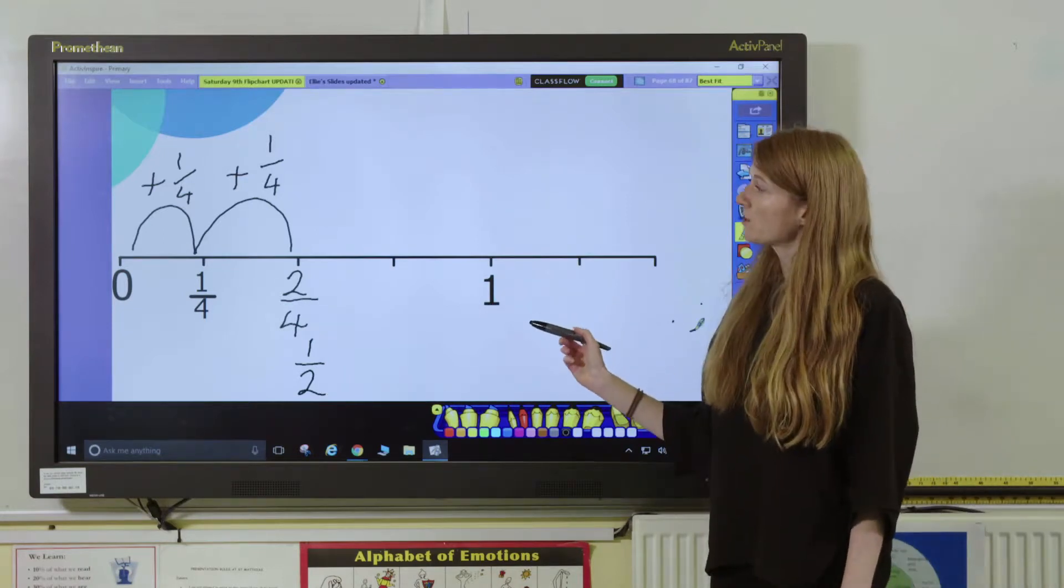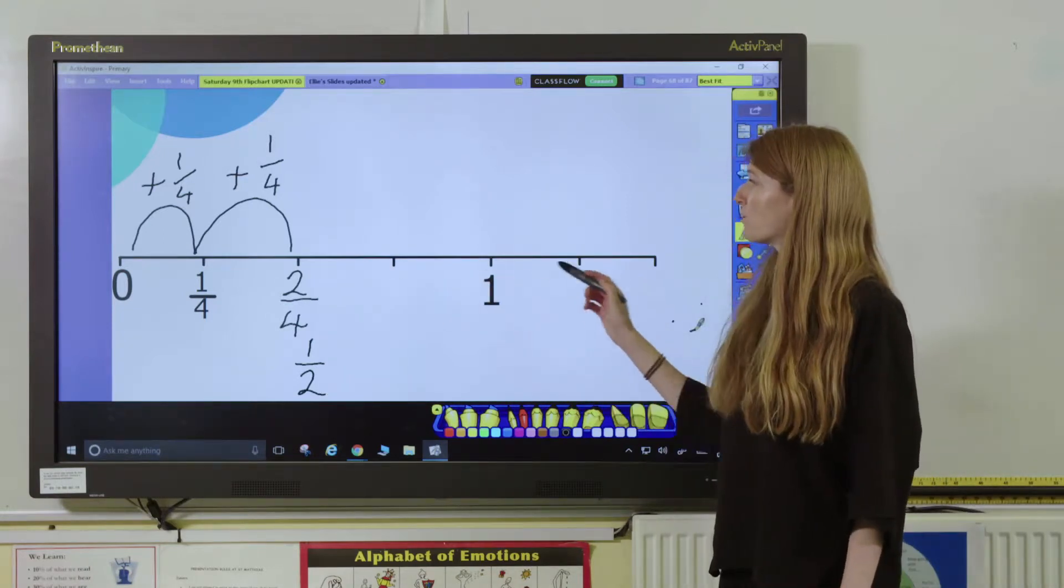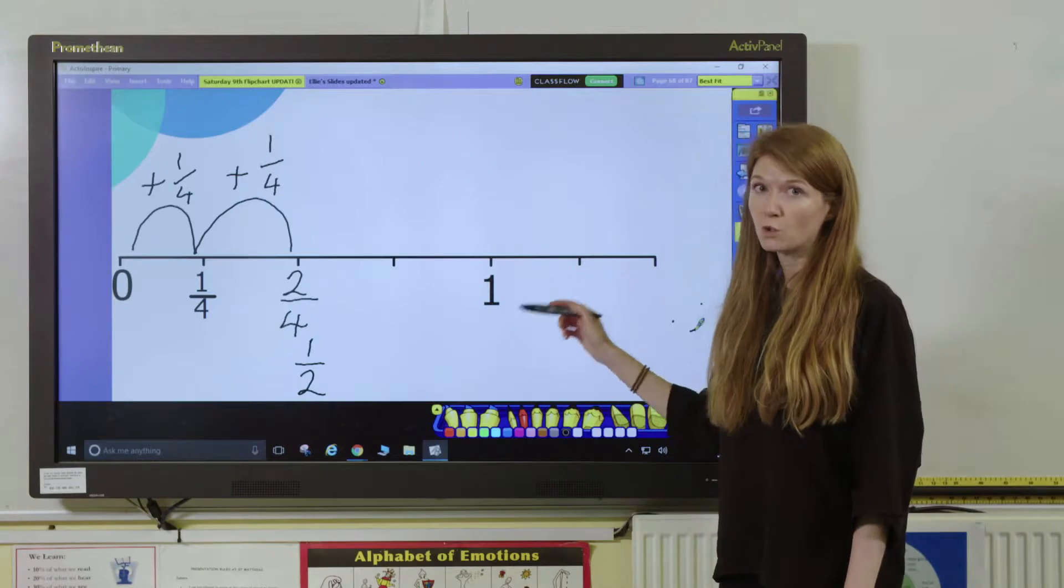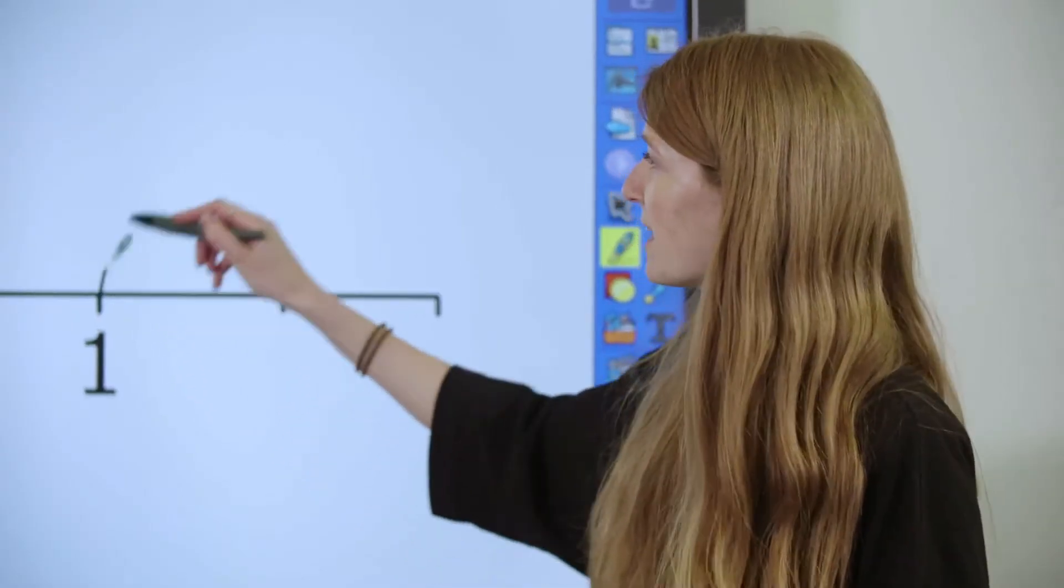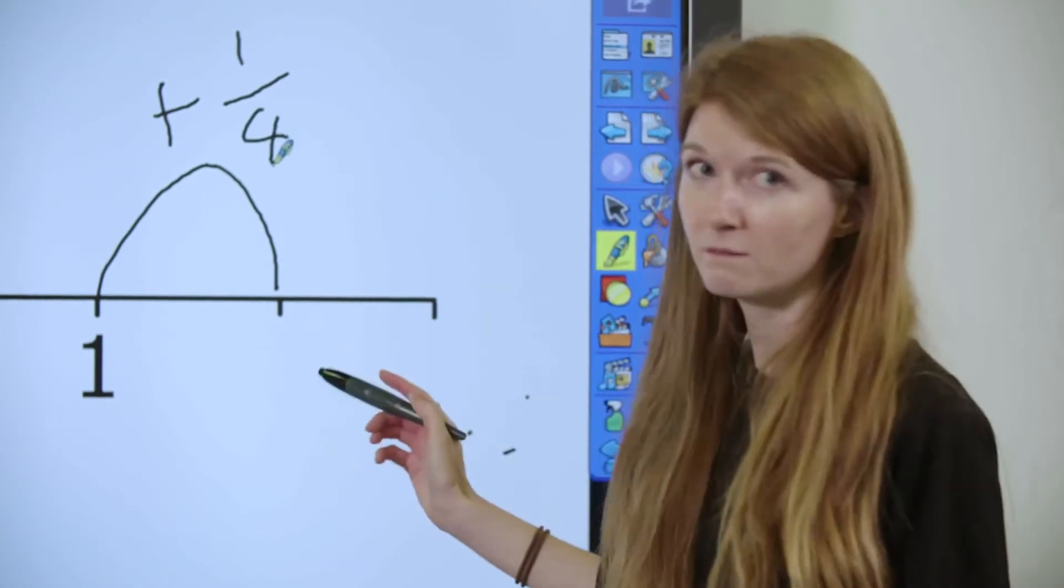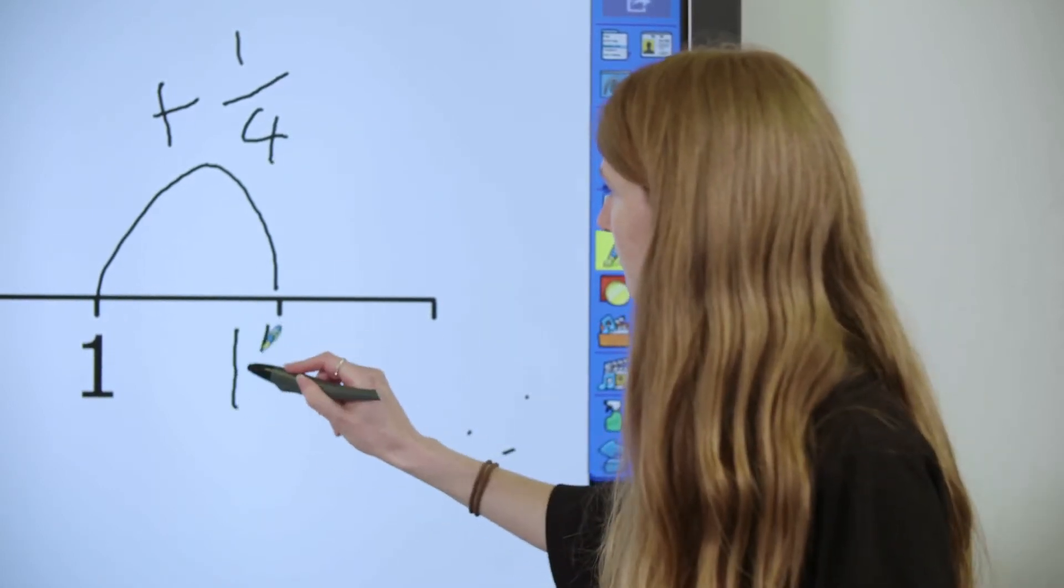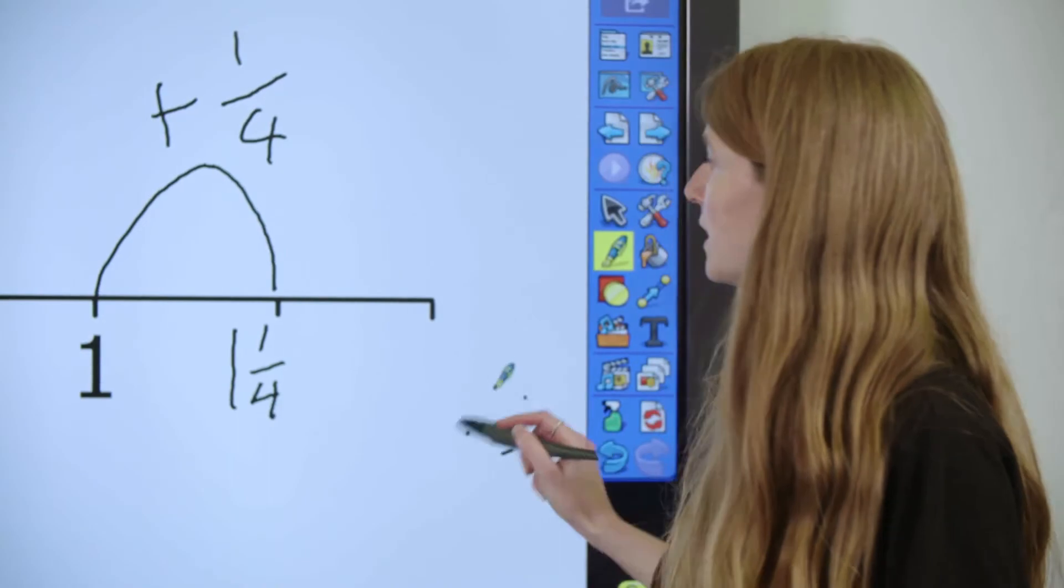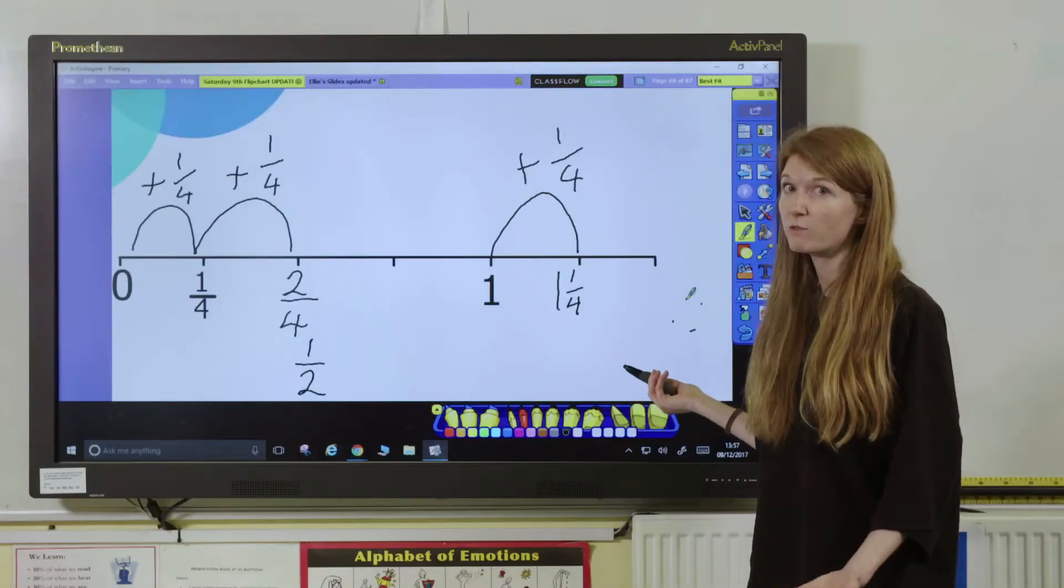Another important thing to notice is that in this number line we've made sure we go beyond one so that pupils can then think about one and a quarter or perhaps five quarters.